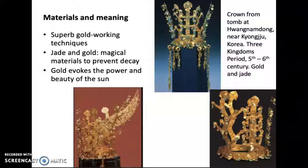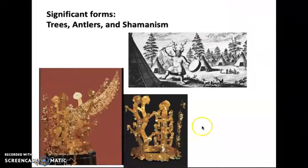The societies of the Three Kingdoms were aristocratic societies with rigid social stratification, where you basically had the free versus the unfree — freeborn aristocracy and common citizens, and then a hereditary class of slaves. Birth determined your rank and privilege. The crowns are linked to the idea of shamanism; the rulers seem to have been understood to have shamanic powers. We know they're linked to shamanism for a number of reasons, one being the significant forms of the crowns themselves.